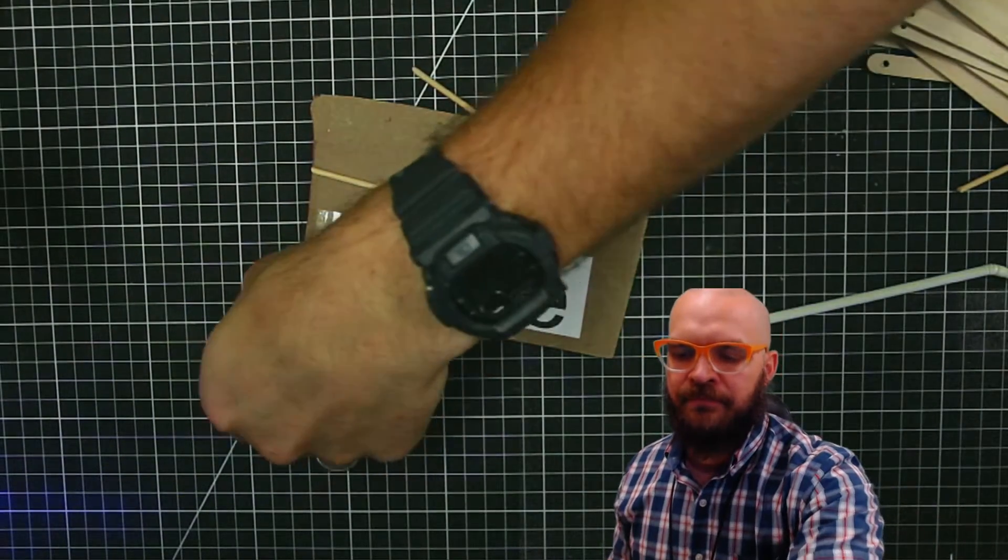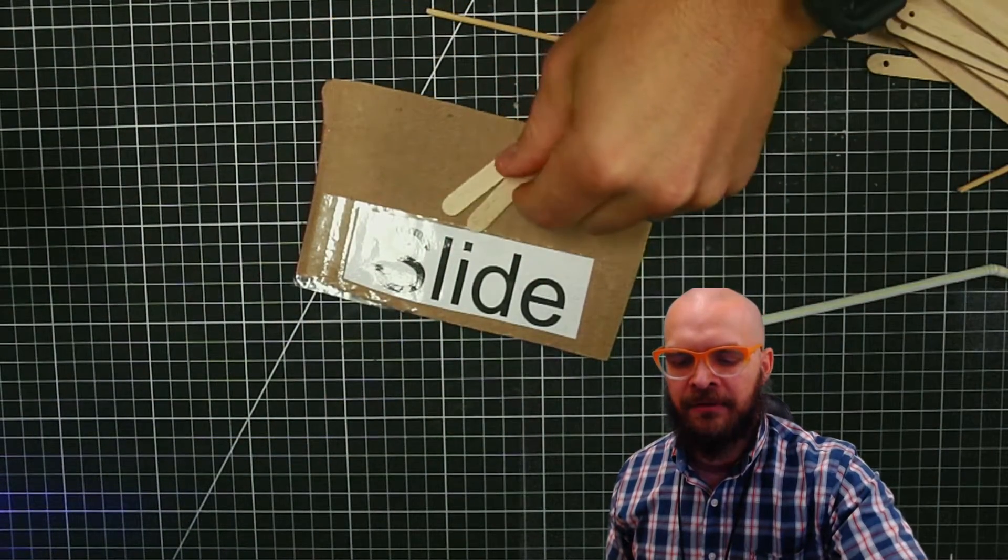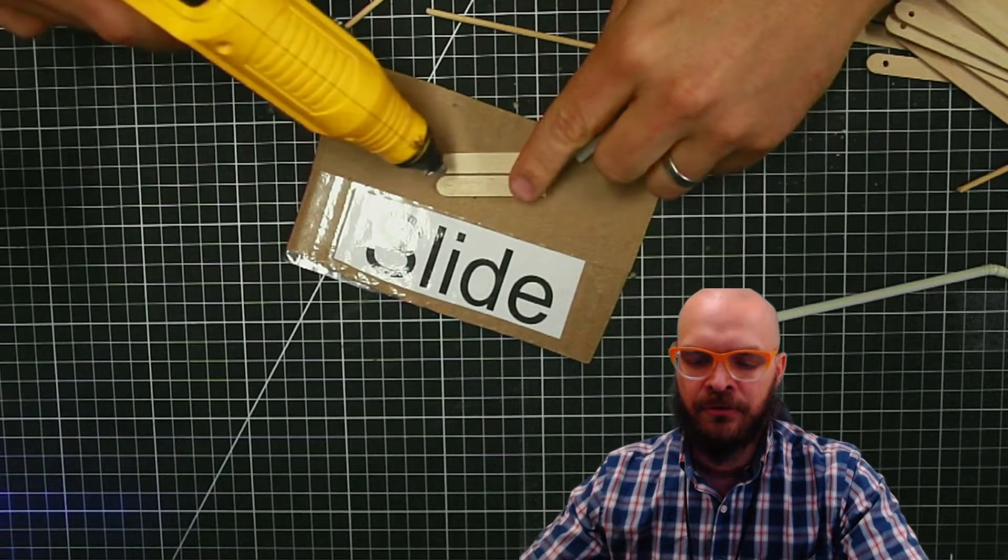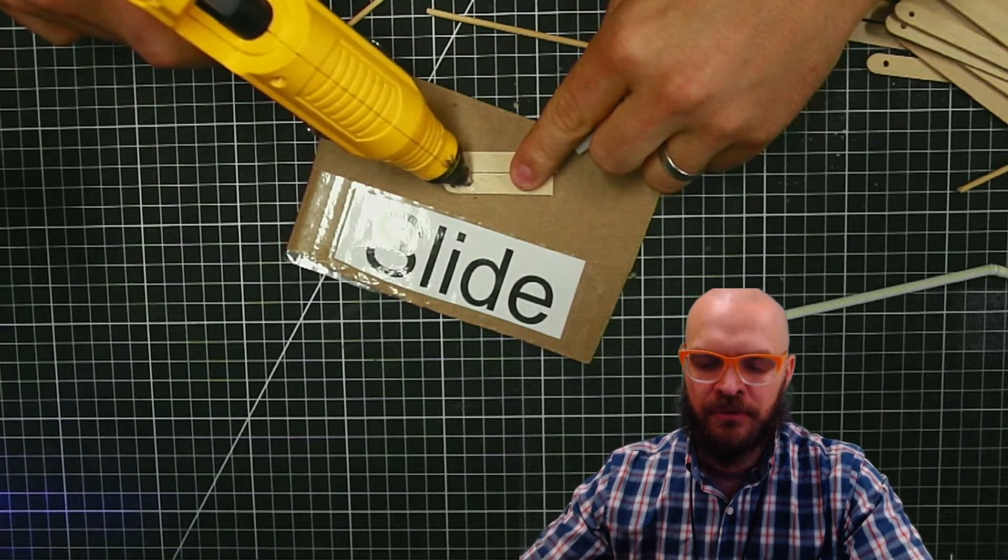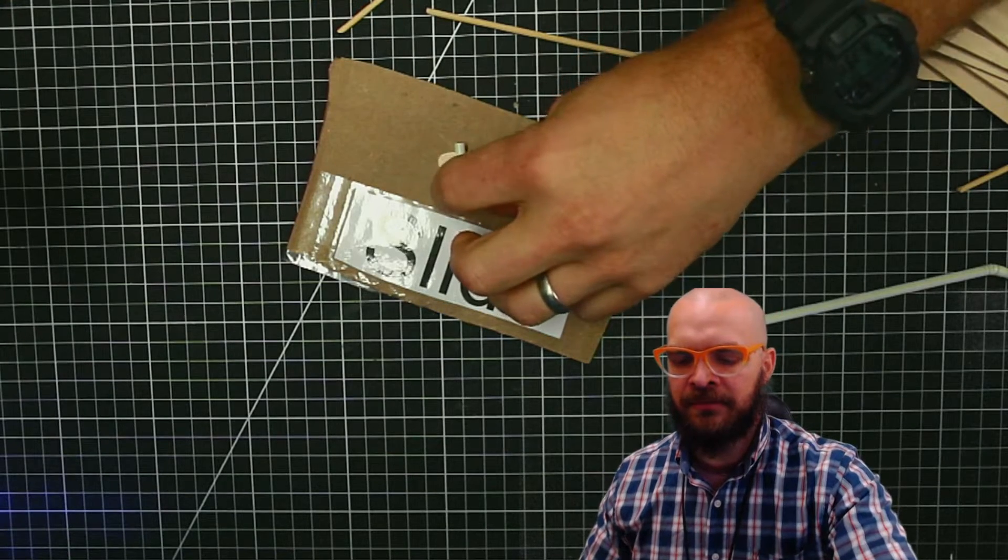So the first thing we want to do is make the sled that's going to slide over and back on the slide. I'm going to glue these two bits of straw to these two popsicle sticks.